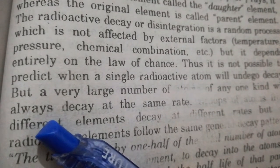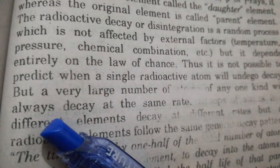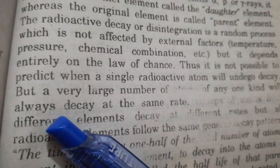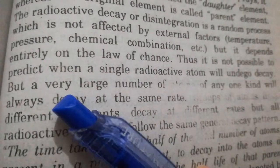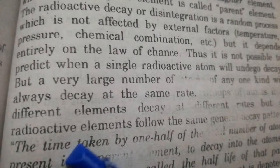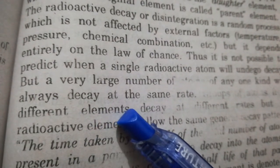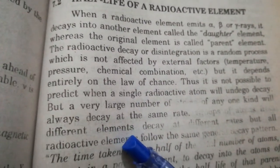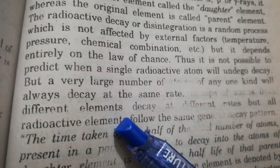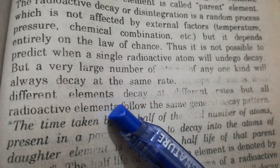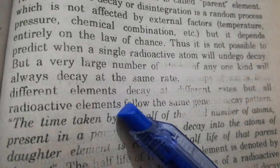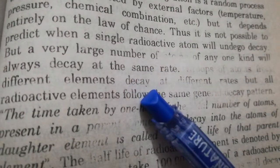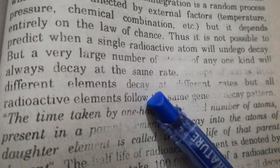We cannot predict exactly when a particular atom will decay, but we can say that for a given sample of an element, after a certain time, half of the atoms that were originally present will remain. The time in which half the atoms decay is what we call the half life. We cannot predict decay for a particular atom, but the rate of decay is the same for all elements with a large number of atoms.